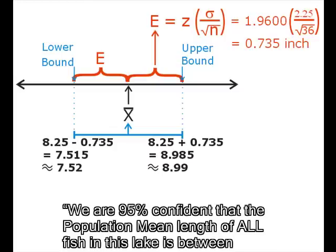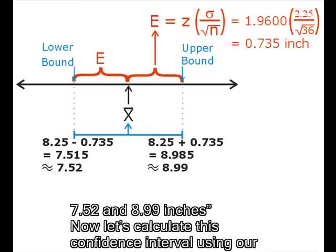We are 95% confident that the population mean length of all fish in this lake is between 7.52 and 8.99 inches.